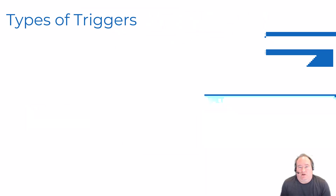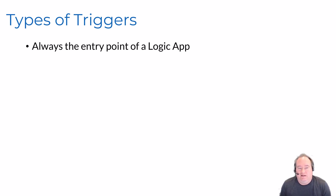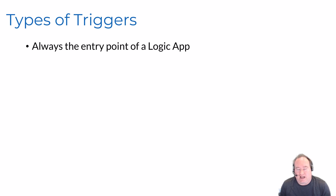As we get started talking about connectors, let's first start by talking about triggers. Triggers are exactly what they sound like - they're essentially the entry point to a logic app. You have triggers that start both consumption and standard edition logic apps, and when the trigger fires it will run all the actions underneath the trigger if there is data found for that trigger.